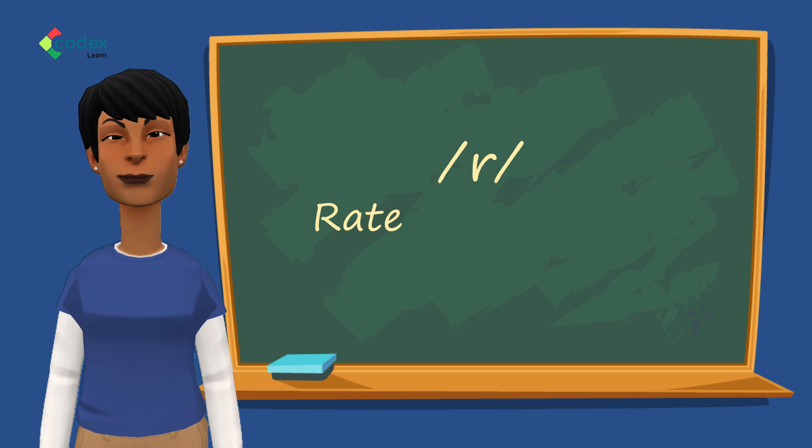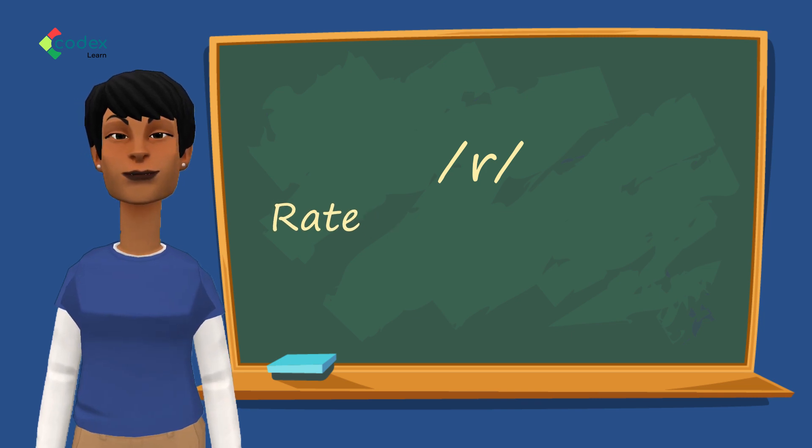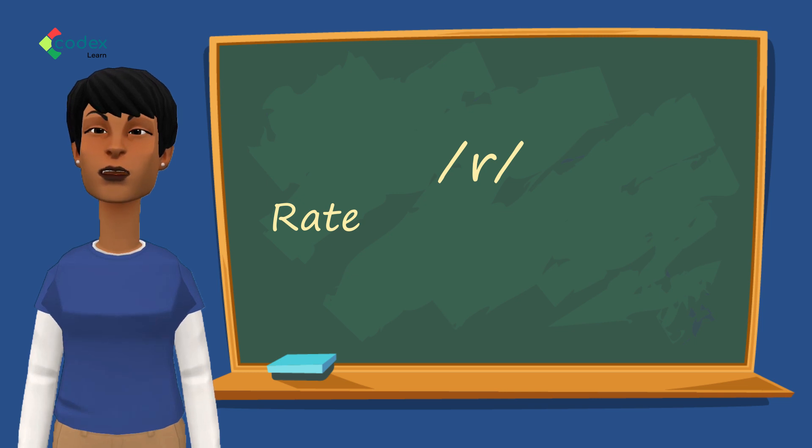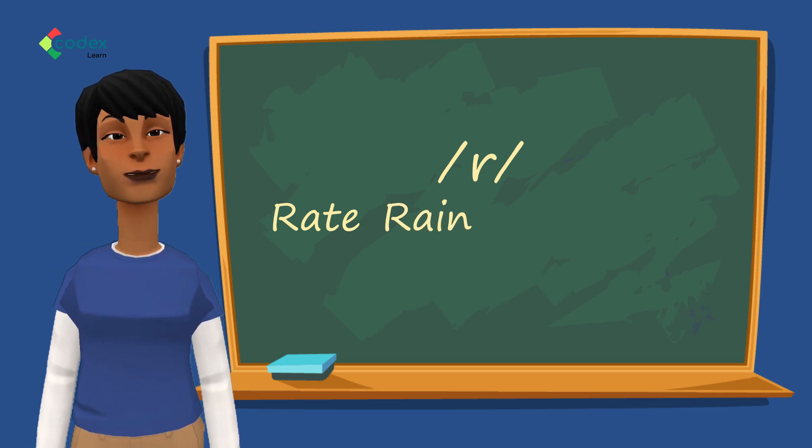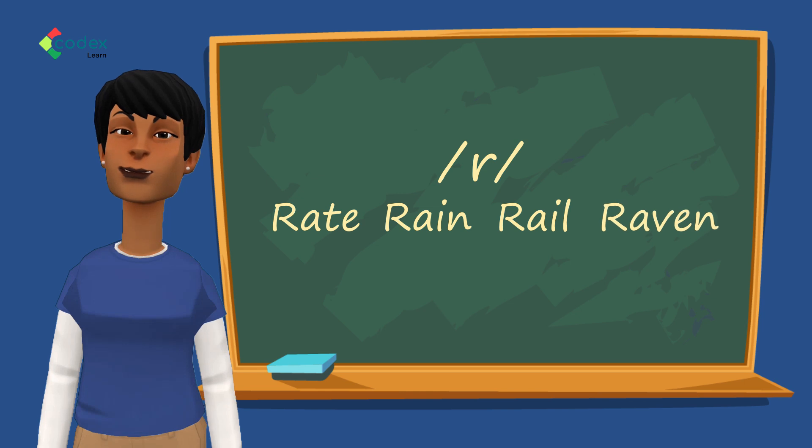Say RATE. Again, RATE. With this consonant sound, you can say other words that start with the letter R such as RAIN, RAIL and RAVEN.